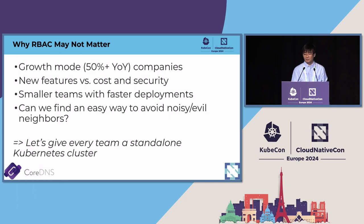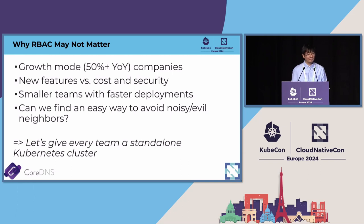The biggest cluster you can handle in a Kubernetes environment is about 5,000 nodes. But on average, when talking to companies with fewer than 1,000 employees, most clusters range from about five nodes up to maybe 20 nodes. So that's not a big cluster — that's the scenario we encounter with smaller companies.